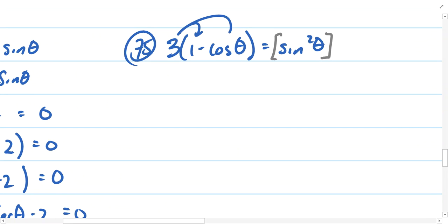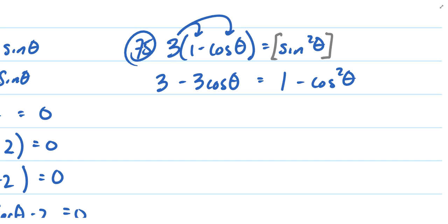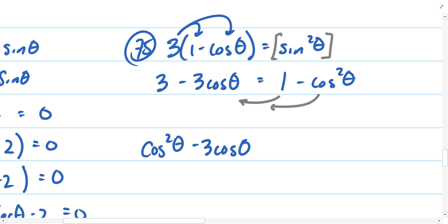So while I'm considering that, I'm also thinking about clearing out the parentheses here. So I'm going to call this 3 minus 3 cosine theta equals 1 minus cosine squared theta. And again, this comes from our Pythagorean identity, allowing us to rewrite sine squared as 1 minus cosine squared. Now I'm going to move both these terms to the left side of the equation, make this thing equal to 0. So I've got cosine squared minus 3 cosine plus 2 equals 0.